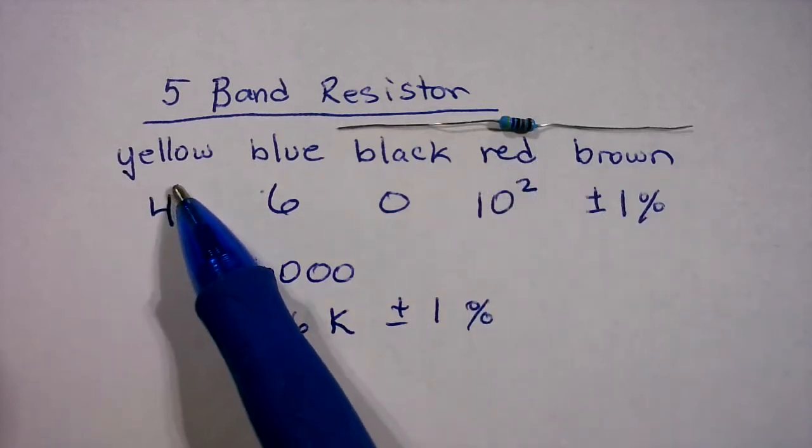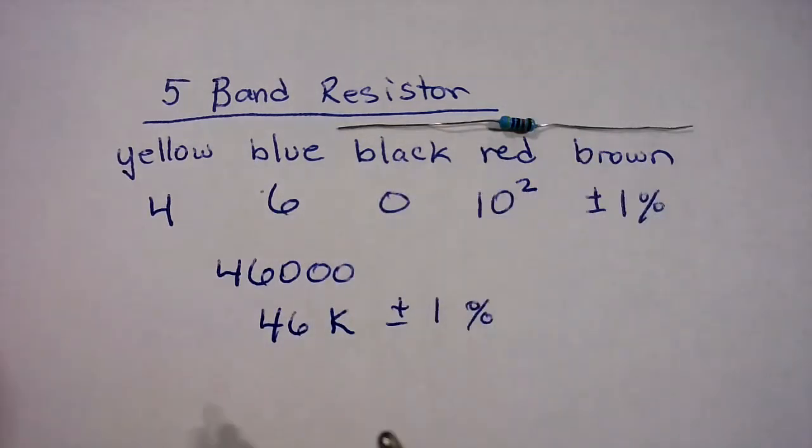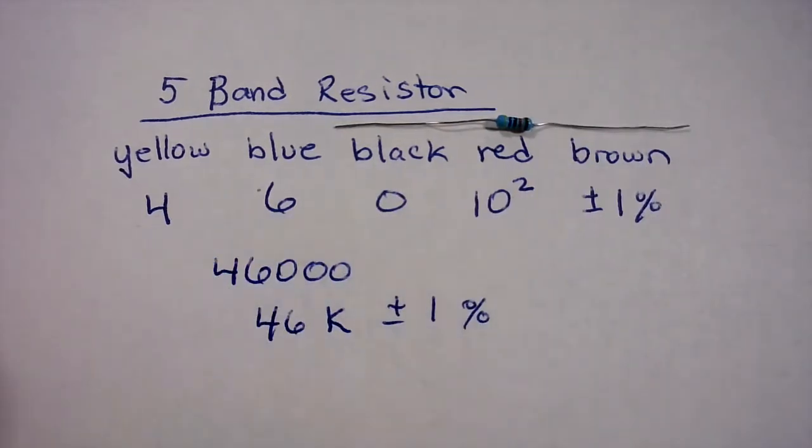So when I look at it, I see I have yellow, blue, black, red, and brown. So this gives me some information.